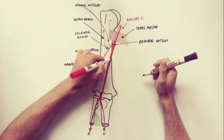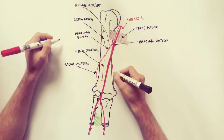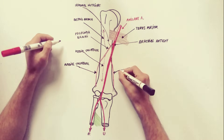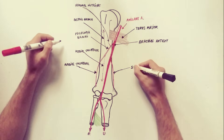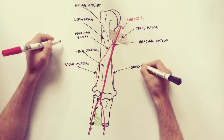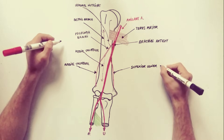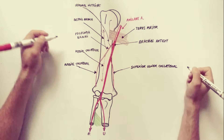Besides the profunda brachii, we have two more branches from the brachial artery. The superior ulnar collateral artery arises near the middle of the arm and accompanies the ulnar nerve posterior to the medial epicondyle.